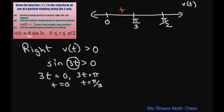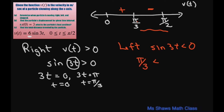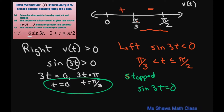For moving left, that's when sine of 3t is less than zero, which occurs on the interval from pi divided by 3 to pi divided by 2. The particle is stopped when sine of 3t equals zero, which happens at t equals zero or t equals pi divided by 3.